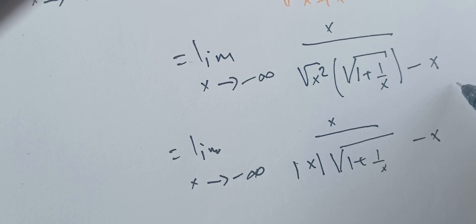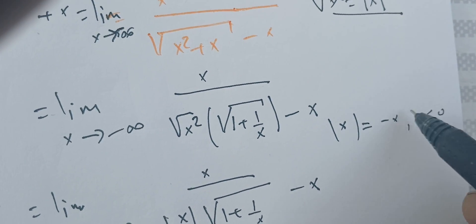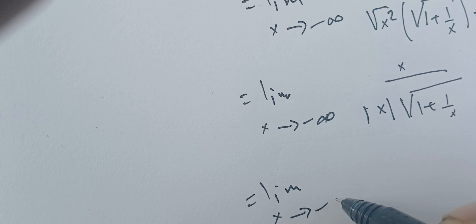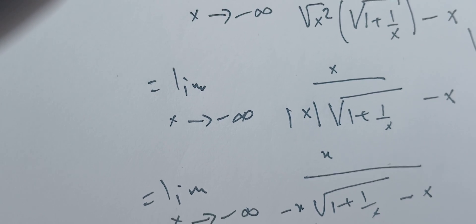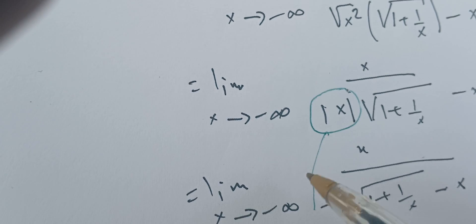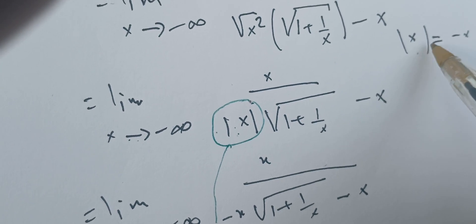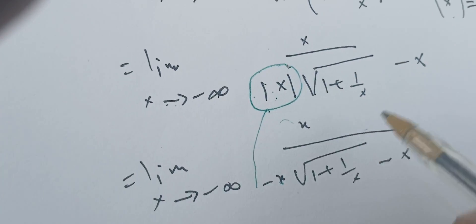Now note that when x is negative, the absolute value of x is minus x. Since x is going to minus infinity, it is negative. So we replace the absolute value of x with minus x, giving the limit as x goes to minus infinity of x over minus x times the square root of one plus one over x, minus x. This is the key idea: absolute value of x equals x if x is positive, and minus x if x is negative.